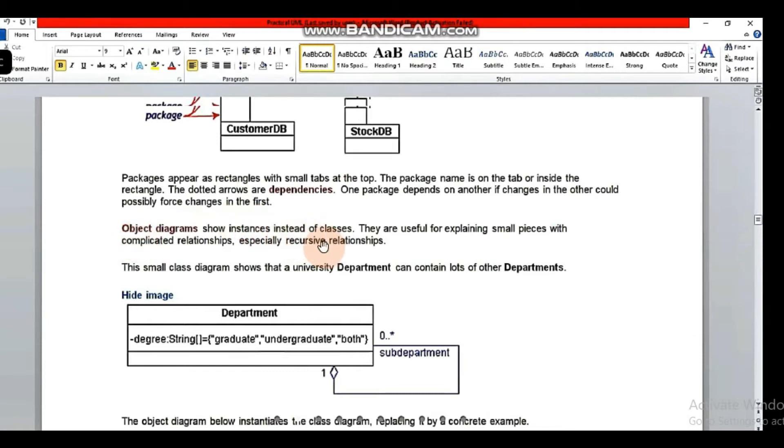Object diagrams show instances instead of classes. The instances are basically how to initiate a class - we have instances, we have objects. The diagram shows instances instead of classes. They are useful for explaining small pieces with complicated relationships, especially recursive relationships.